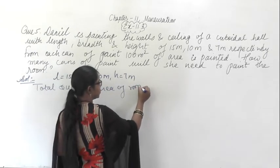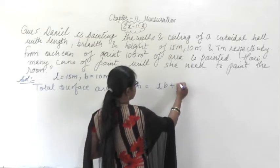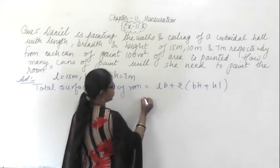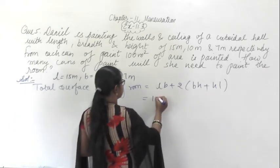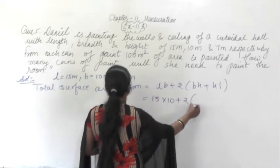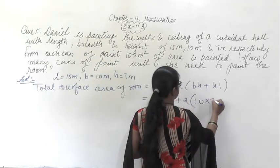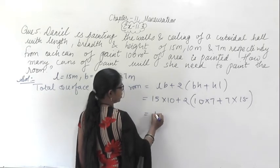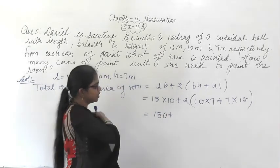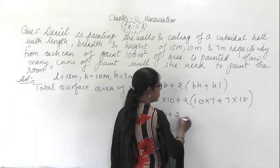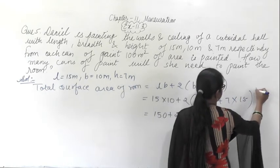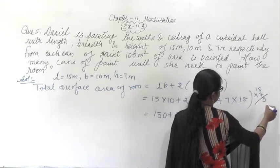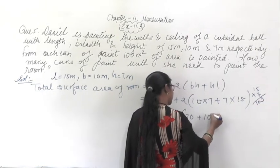So from here you can find out the total surface area of the room. That will be equal to 2 into (length × breadth + breadth × height + height × length). Length is 15, breadth is 10, height is 7. So: 2 into (15 × 10 + 10 × 7 + 7 × 15), which gives 2 into (150 + 70 + 105).